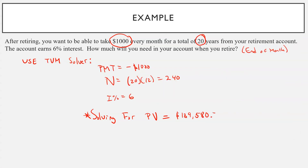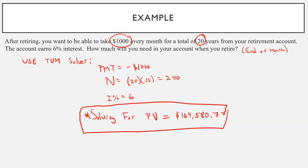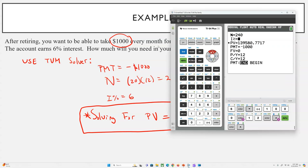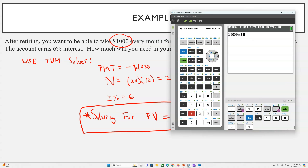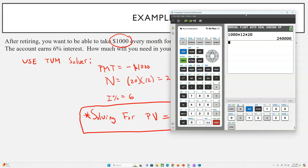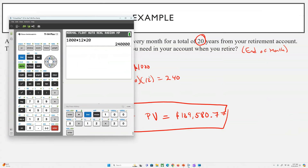Just to show you the power of interest: suppose you wanted to withdraw $1,000 every month for 20 years. If your account wasn't getting any interest, you would need to have $240,000 saved. But because your money is still getting interest, you only need a little bit more than half of that.